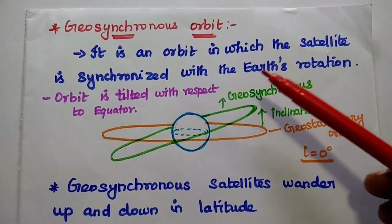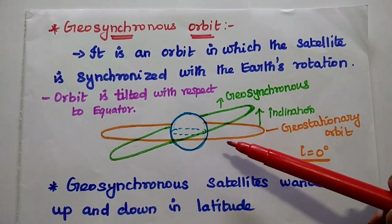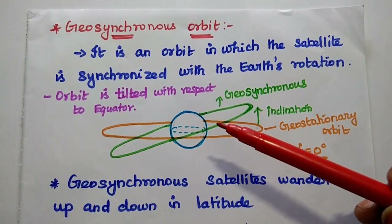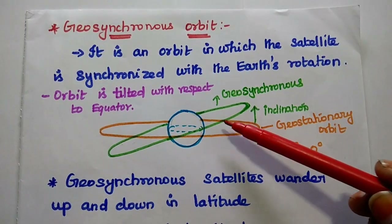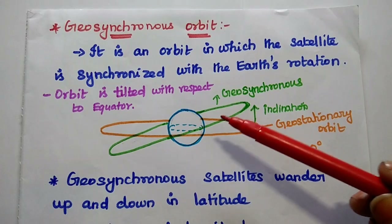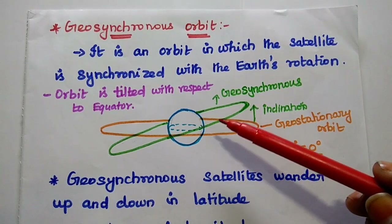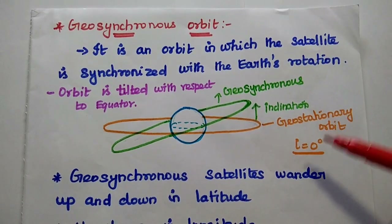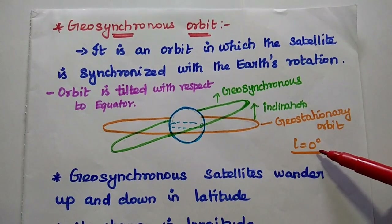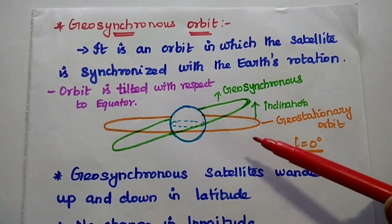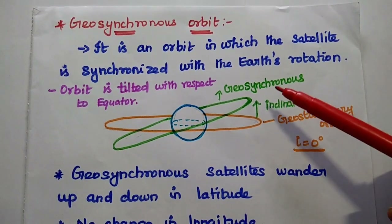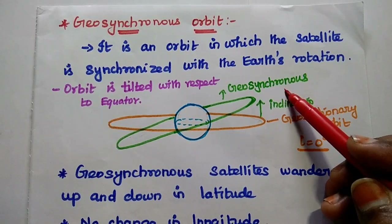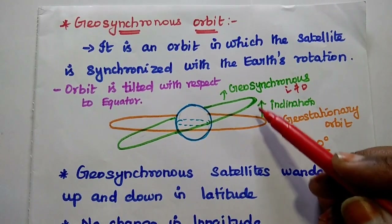Next is the geosynchronous orbit. It is an orbit in which the satellite is synchronized with the earth's rotation — the satellite orbits the earth at exactly the same speed as the earth. However, unlike geostationary orbit where the inclination angle is 0, the geosynchronous orbit is tilted with respect to the equatorial plane of the earth, so I is not equal to 0.